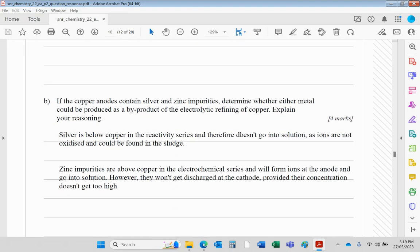If the copper anodes contain silver and zinc impurities, and they often do, and they often contain things like gold as well, determine whether either metal could be produced as a byproduct of this refining process. Silver is below copper in the reactivity series, so effectively they're not going to go into solution. The ions will not be oxidized and they'll be found in the sludge. Silver effectively will be present in the sludge which collects at the bottom of the electrolytic cell.